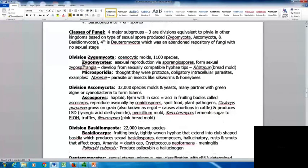The Microsporidia used to be thought of as protozoa. They're obligatory intracellular parasites. An example is Nosema, a parasite on insects like silkworms and honeybees.